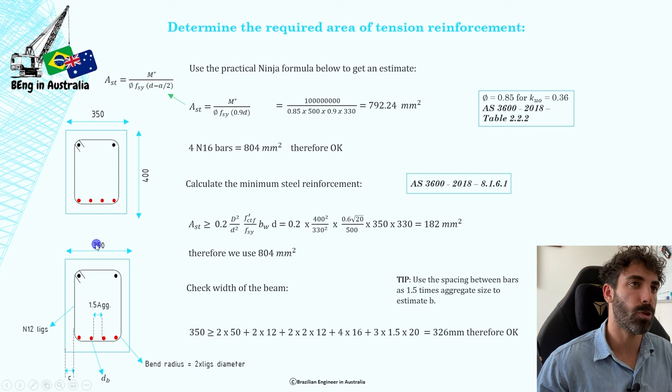So 350, which is the total width of the beam, needs to be greater than two times the side cover, which is 50 on each side, plus two times the leg's diameter, plus four times the leg's diameter (that is two times leg's diameter times two because you've got two bend radii here), plus four times the bottom bars diameter (four times 16), plus three times 1.5 times 20 (three spacings in between bars). That equals 326 millimeters, therefore we are okay. All the bars fit nice and neatly in our beam.